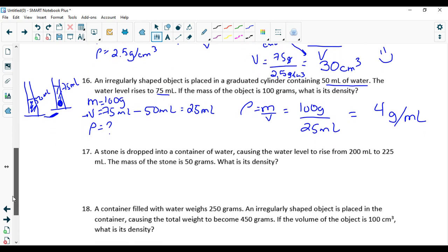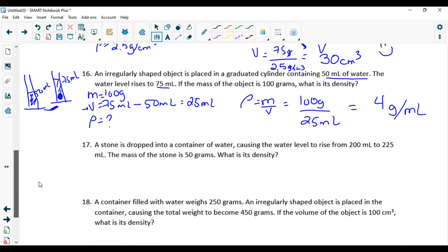Fantastic. Number 17. A stone is dropped into a container of water causing the water level to rise from 200 to 225. So it's very similar to this question. The mass of the stone is 50 grams. What is the density? What do you think? m equals, v equals. What is m? Yes, 50 grams. What is volume? Well, we have to do the math: 225 mL minus 200 mL.